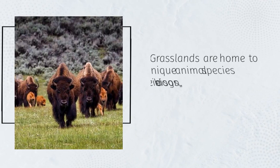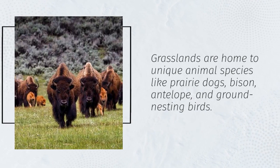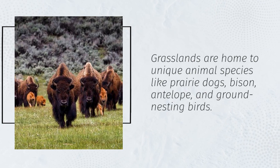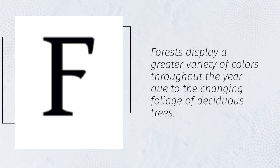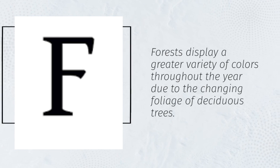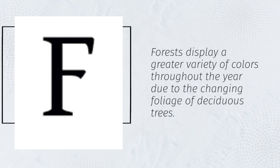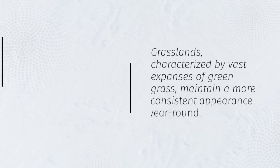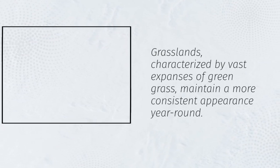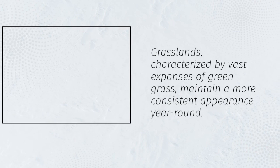Grasslands are home to unique animal species like prairie dogs, bison, antelope, and ground-nesting birds. Forests display a greater variety of colors throughout the year due to the changing foliage of deciduous trees. Grasslands, characterized by vast expanses of green grass, maintain a more consistent appearance year-round.